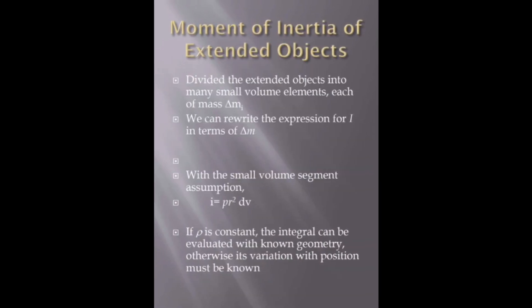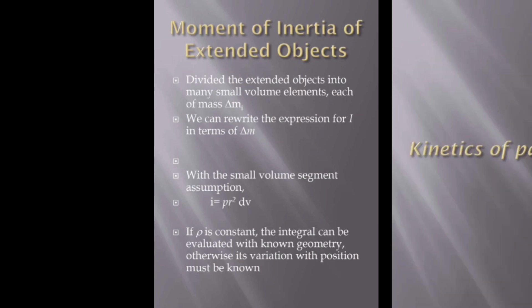Moment of inertia of extended objects. Mass is shown as del m, which can also be written as rho dV with a small volume segment. Assuming I equal to rho dV, rho is constant. The integral can be evaluated with known geometry, otherwise its variation with position must be known.